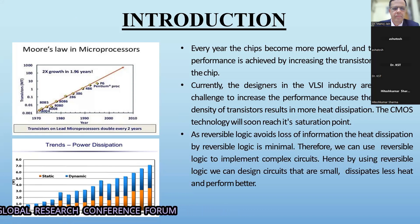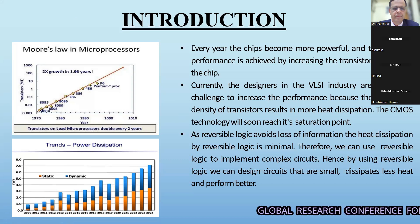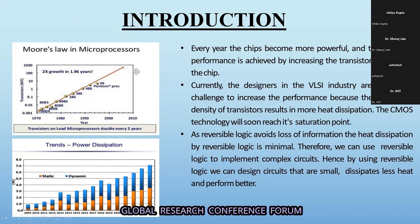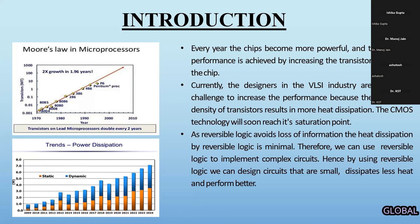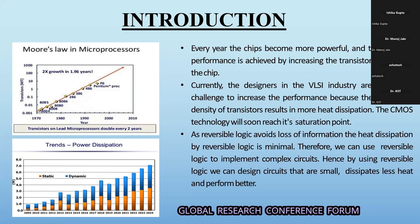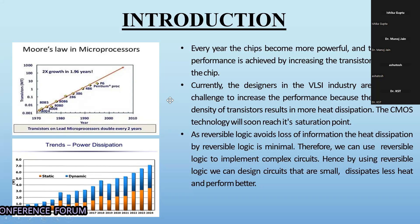According to Moore's Law, every 18 months the number of transistors on a chip doubles. With this increase in transistors, the power consumption also increases. This growth is totally non-sustainable — as soon we will reach the saturation point, we will run out of ways to cool this circuit. Therefore, we need to find an alternative technology.